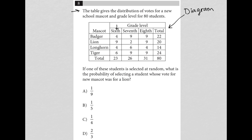So let me just make sure I understand that. I see my grade levels 6th, 7th, 8th grade, and I see my mascots badger, lion, longhorn, and tiger. So I assume that means distribution of votes. So in 7th grade for instance there were 9 votes for the tiger as the mascot.